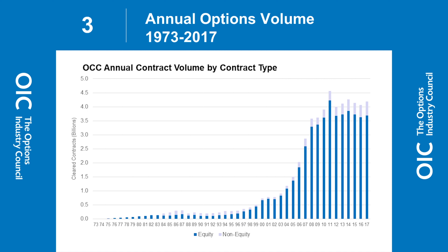We got tighter bid-offer spreads and electronic access to the marketplace via the first electronic exchange, the ISE, which is now part of NASDAQ. Option volume went up, and for the first time ever in 1999, we did over 500 million contracts over the whole year. You can see the spike in August 2011, when the U.S. lost its AAA credit rating – remarkably, in that month alone, the industry did over 500 million contracts.